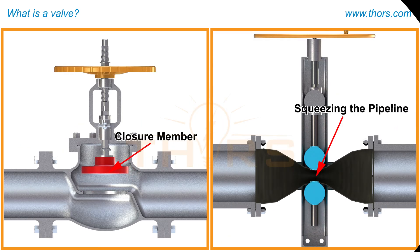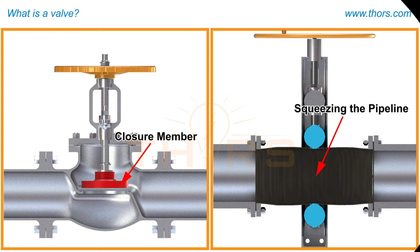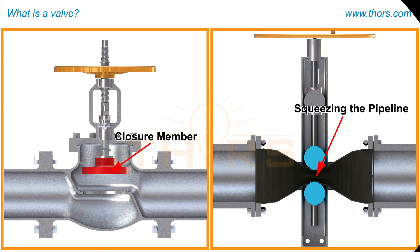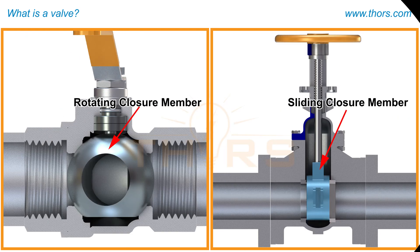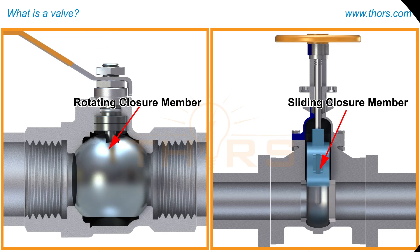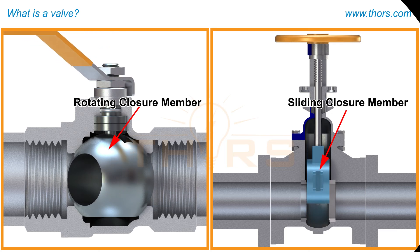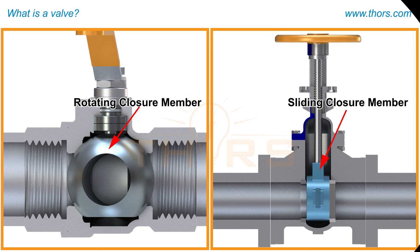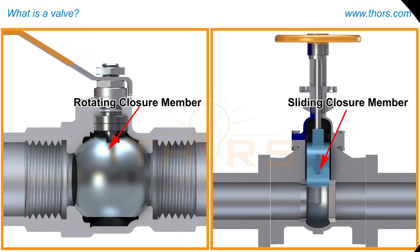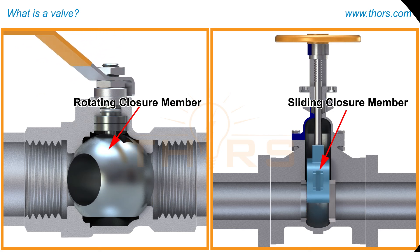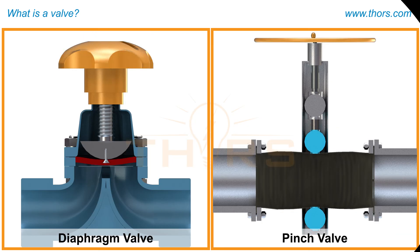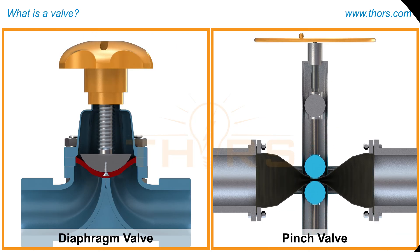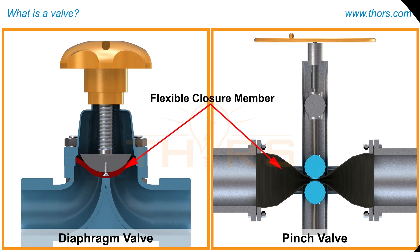A valve can be controlled or closed either by placing a closure member in the valve passage or by squeezing the pipeline. The closure member can be placed in the valve by obturating or thrusting the closure member onto the seat, by rotating the closure member in line with the seat, or by sliding the closure member onto the seat. The closure member can be squeezed to control or close the valve only if the closure member is a flexible type.